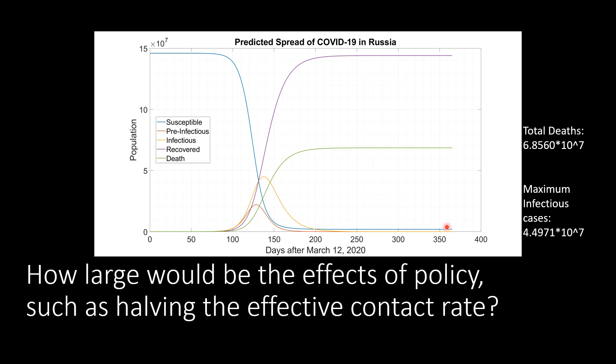In this example, I will show what the effects of reducing the effective contact rate will have on the simulation. I've written down the number of deaths and the maximum infectious cases with a peak of the yellow line on the right side so that we can compare different scenarios.